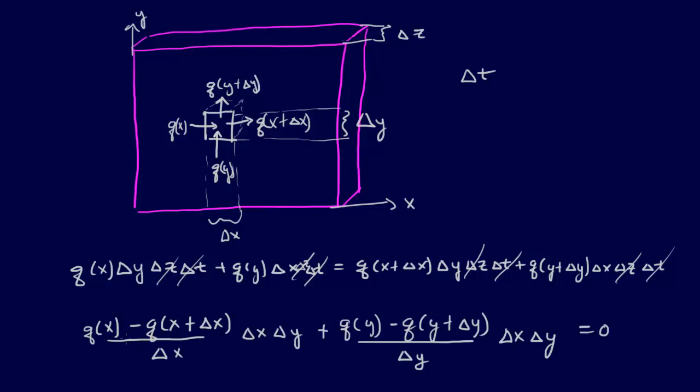So we get, what we get is this q of x minus q of x plus delta x all over delta x. And so to do this, I had to multiply by delta x over delta x, which is fine. And then multiply on this one. On this term, I had to multiply by delta y over delta y. And then this is what I get.